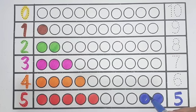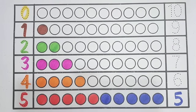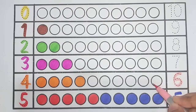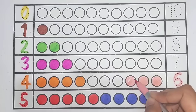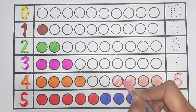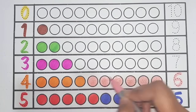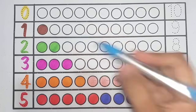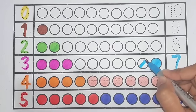3, 4, 5. 5 circles. Light pink color: 6. 1, 2, 3, 4, 5, 6. 6 circles. Sky blue color: 6. Sky blue color: 7. 1, 2.